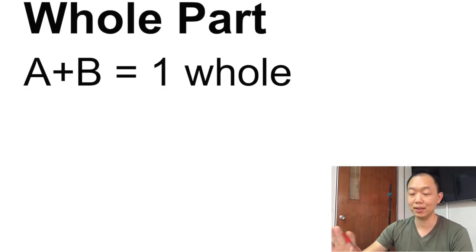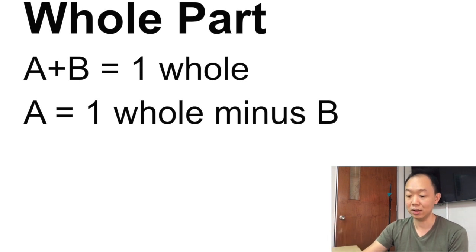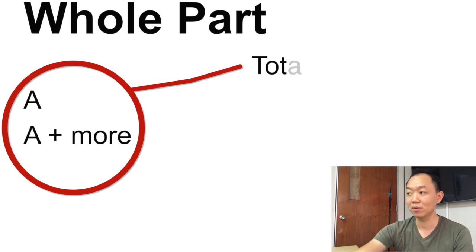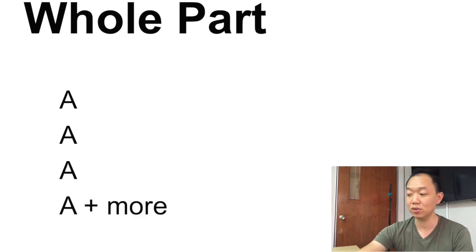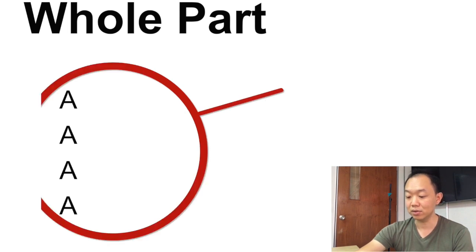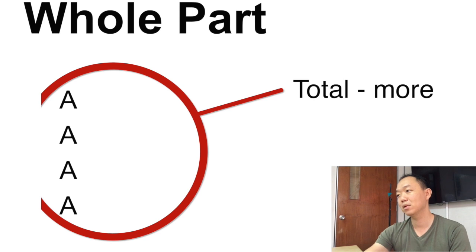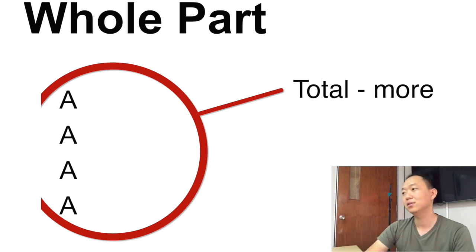For the whole-part concept, if you take A plus B that's one whole — A is one part, B is another part. If you want to find A, you take the whole minus B. Another scenario: two units of A equals total minus the extra amount. So total minus the excess gives two units, and if you want one unit of A, you divide. Whole-part concept: many little parts come together to make one whole. Subtract the excess, then divide to find the number of units.